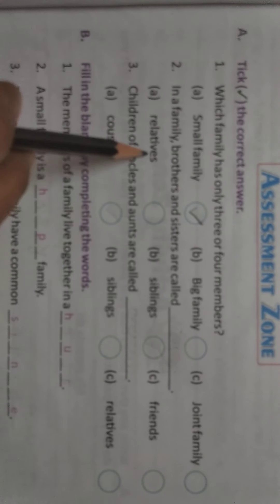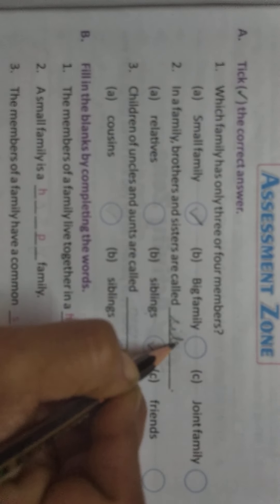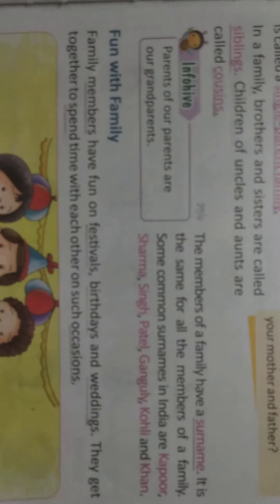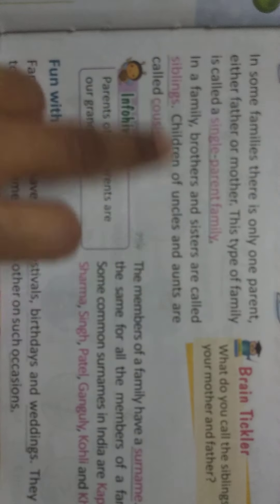Second one: in a family, brothers and sisters are called — family mein brothers and sisters ko kya bulaya jata hai? The options are: A — relatives (relatives means apne mehman log hoti hai), B — siblings (means own brothers and sisters), C — friends. The correct answer is siblings. In a family, brothers and sisters are called siblings — S-I-B-L-I-N-G-S. This term you have learned here.